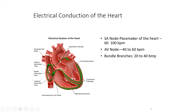Then the current is sent through what we call the bundle branches — we have the left bundle branch and the right bundle branch. The rate for the bundle branches is 20 to 40 beats per minute. If the SA node and the AV node are not working, then the bundle branches pick up the responsibility for electrical conduction of the heart at 20 to 40 beats per minute.